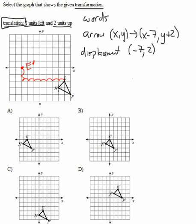Now with N, I do the same thing. Just seven units left. One, two, three, four, five, six, seven. And two units up. One, two. And there is my N prime.